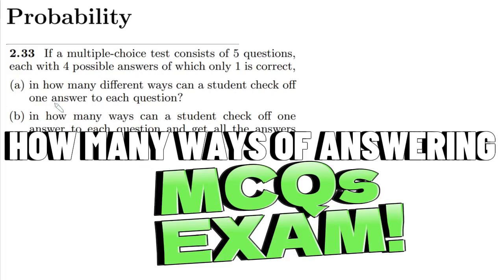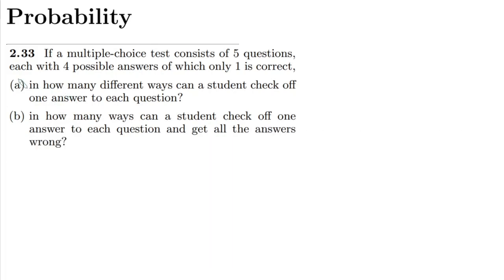Welcome back guys. Today we are going to solve question 2.33. The statement is: if a multiple choice test consists of five questions, each with four possible answers of which only one is correct, in how many different ways can a student check off one answer to each question?